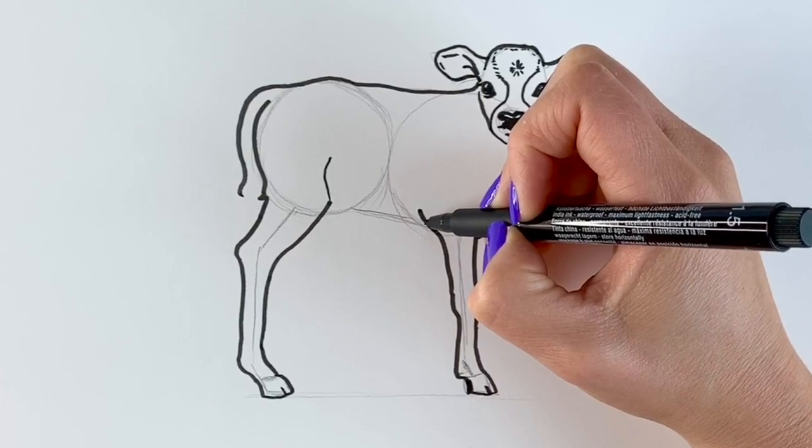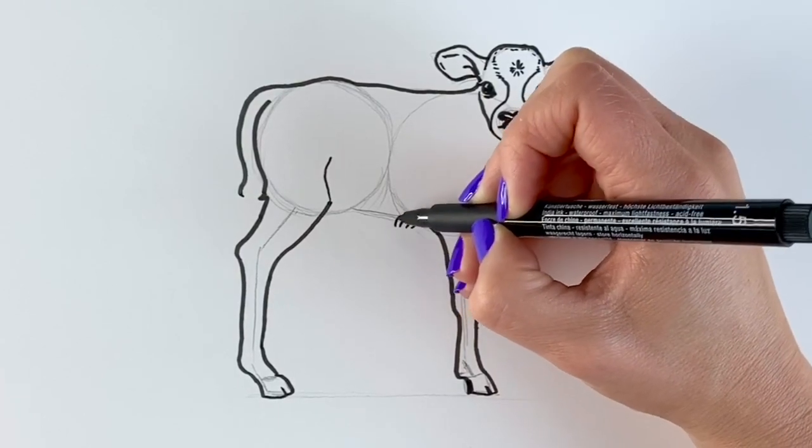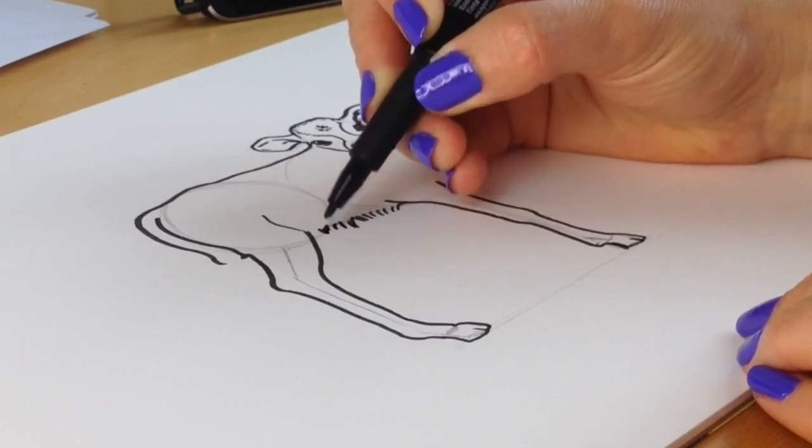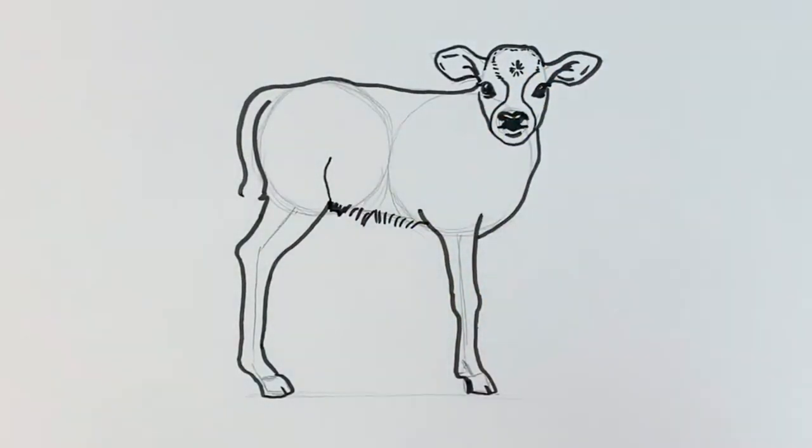And now for the tummy. It's a little bit furry. So I'm going to be drawing these little wispy lines. Just like that. Just to make it look like it's furry.